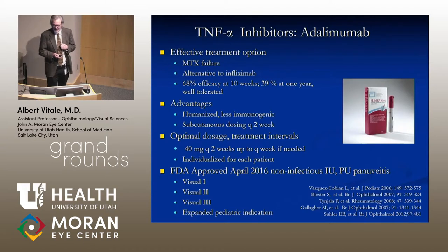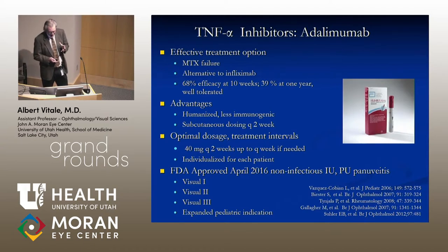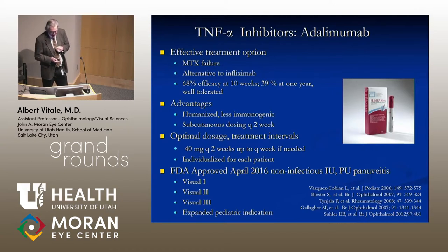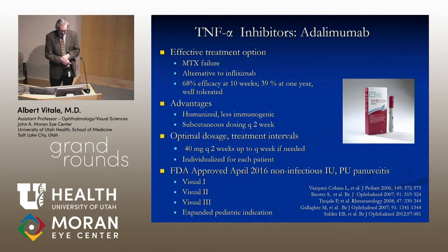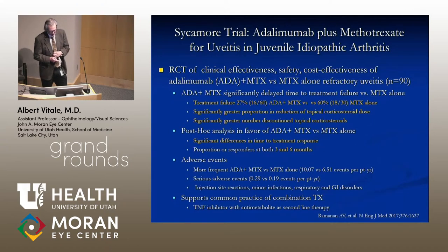Adalimumab, or Humira, is an effective treatment option for patients who fail methotrexate. Its advantages are that it is humanized, less immunogenic, and allows subcutaneous dosing every two weeks. It is FDA approved for adults for non-infectious intermediate, posterior, and pan-uveitis, and has more recently been approved for similar indications in pediatric uveitis.